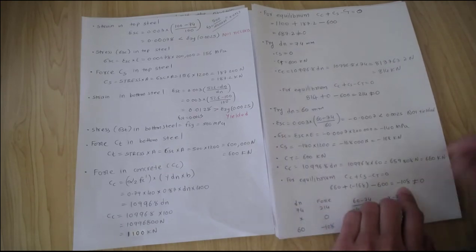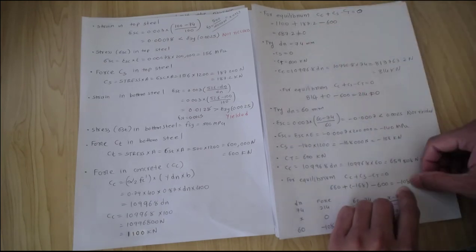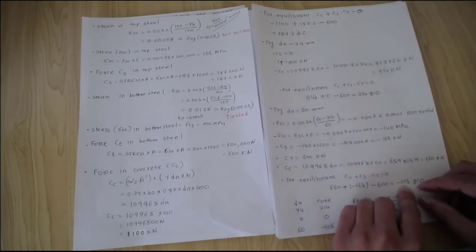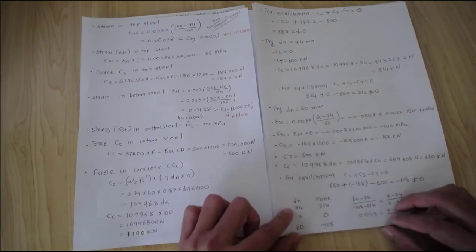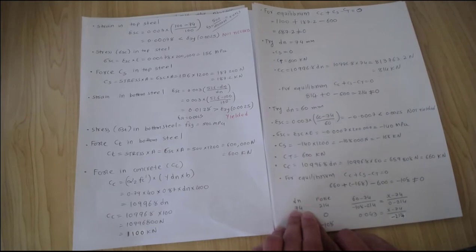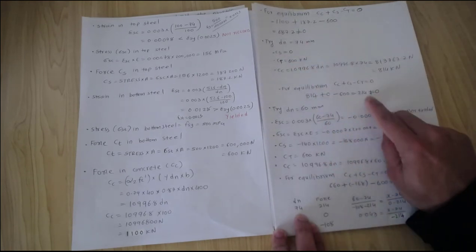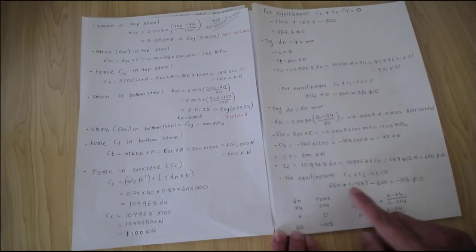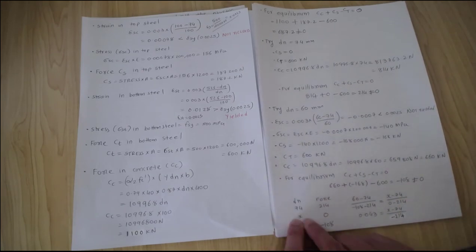Substituting the values: 660 for concrete compression force, minus 168 for top steel, and minus 600 for tension steel gives minus 108. That makes sense — we had a positive value at dn=74 and a negative value at dn=60, so zero must be between these two. Our neutral axis is between 60 and 74. At dn=74 we found 214, and at dn=60 we found minus 108. So what dn value should give me zero?